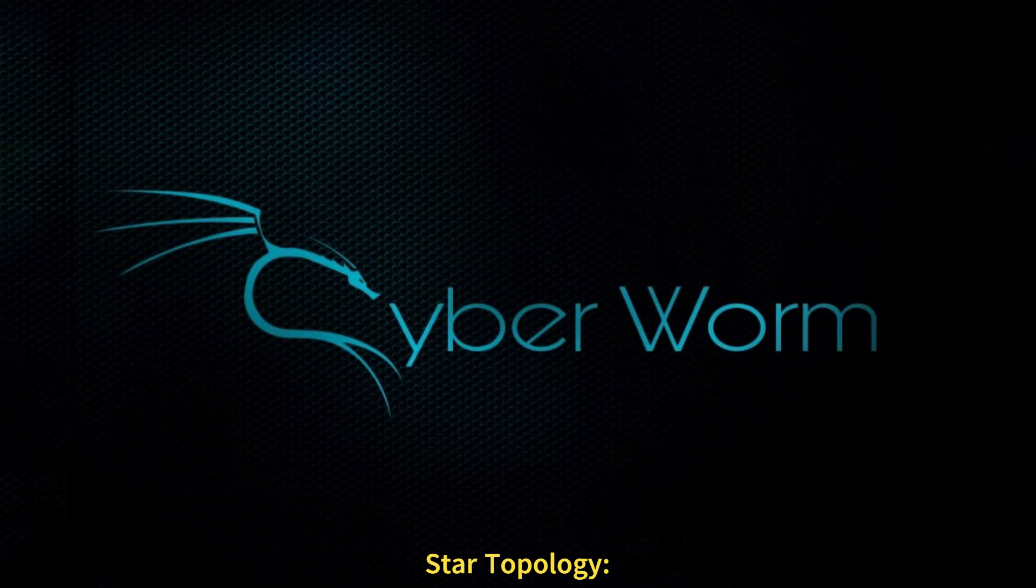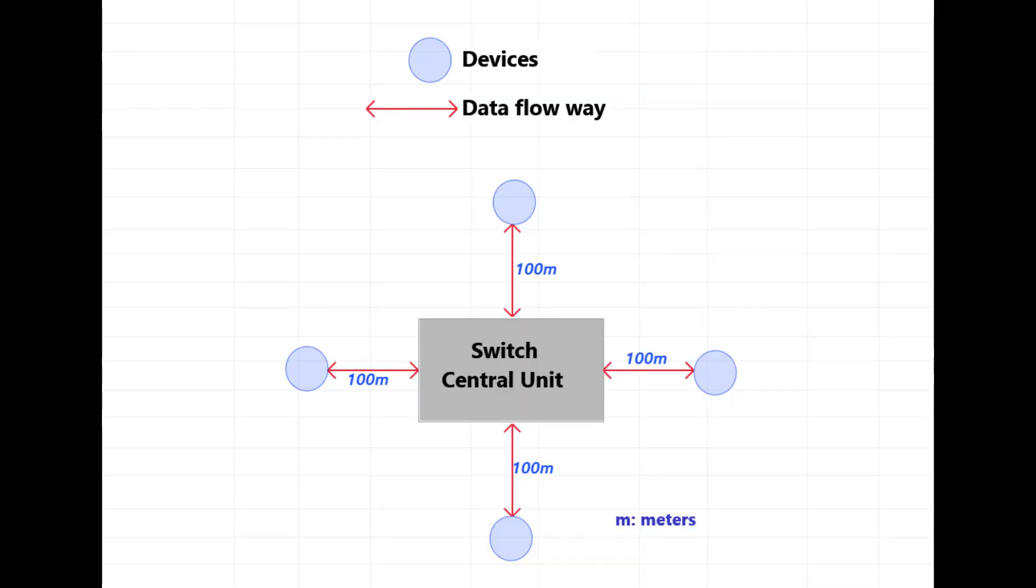Star topology. It is the most widely used topology. In star topology, there must be a central unit for data transfer to take place. There is a switch or hub in the center. All devices in this topology are connected to this central unit. It is better than bus topology. Because in this topology, if there is a problem in one device, the entire network is not affected. It is also a faster topology type than bus.